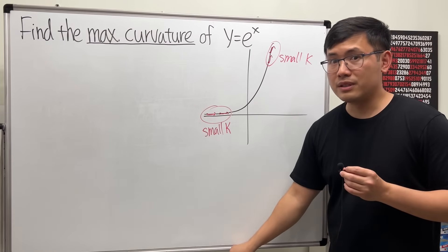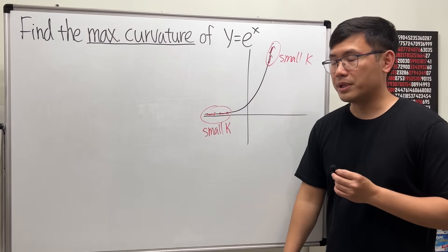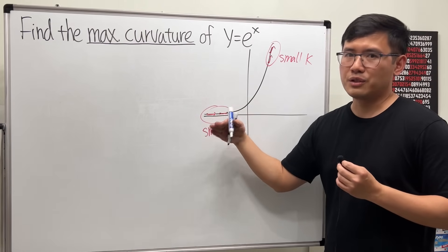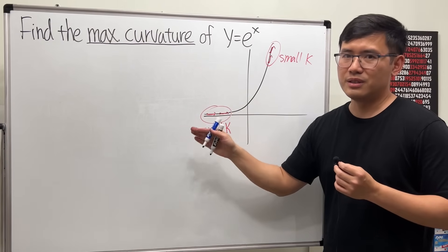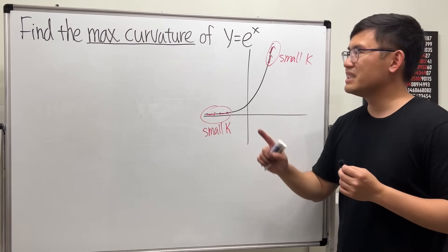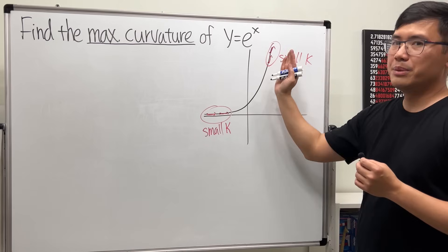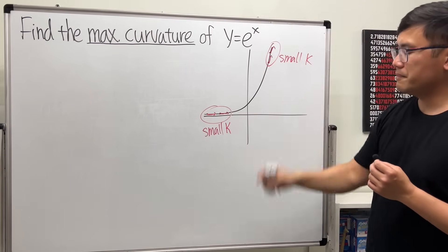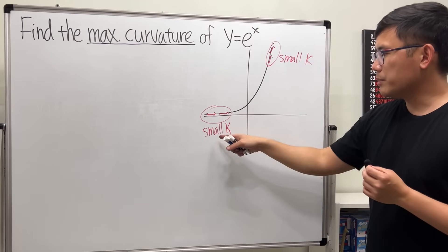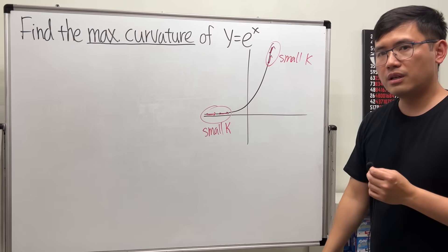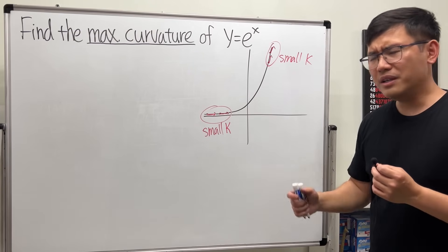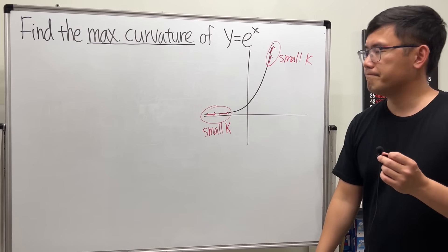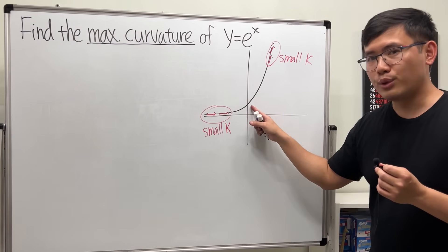But now, if you are talking about the slope, the slope right here is close to zero because the curve is flat. But the slope right here is big, because it goes up really steeply. So we are talking about the kappa, the curvature — where is this curve bending the most? It's not at zero.